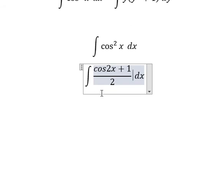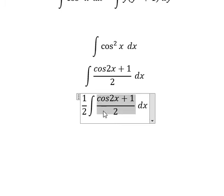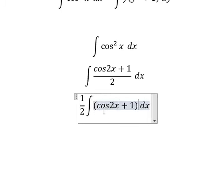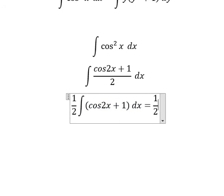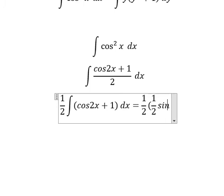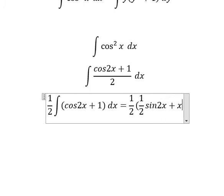So I will put the 2 outside, so we have cosine 2x plus 1. The integral of cosine 2x we have 1/2 sin 2x. The integral of 1 we have x.